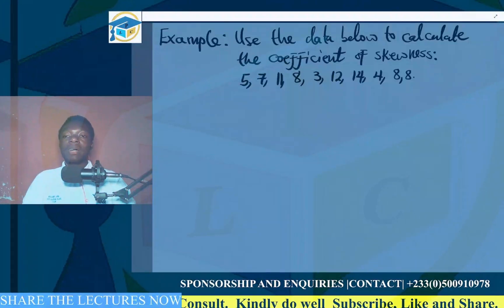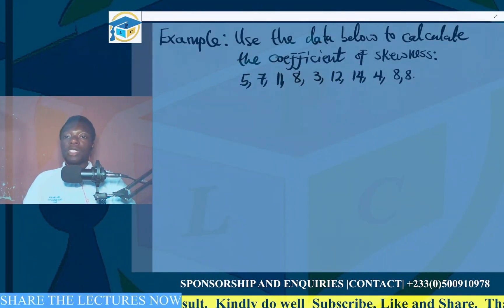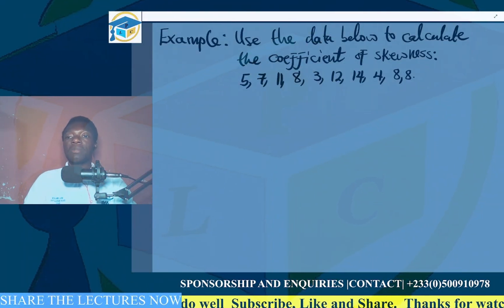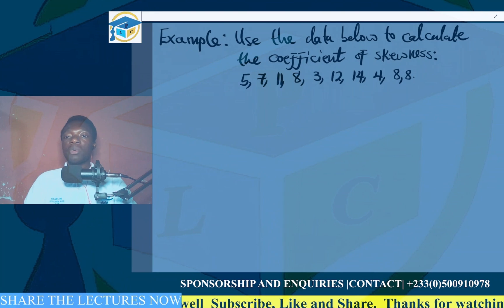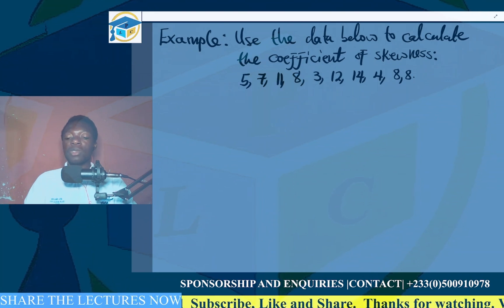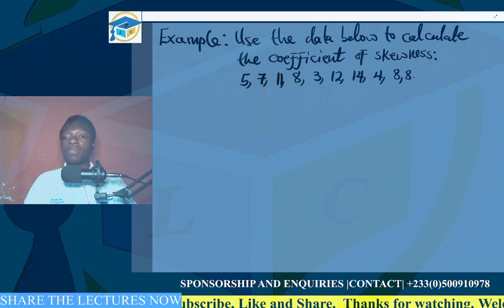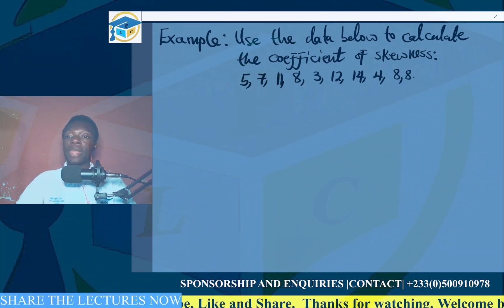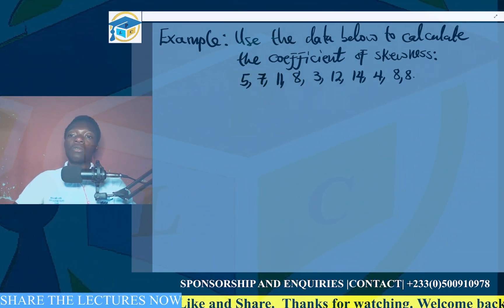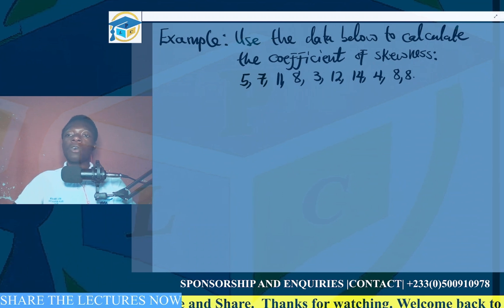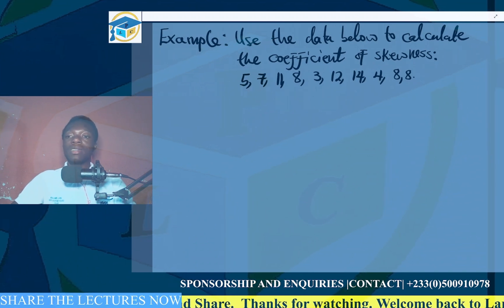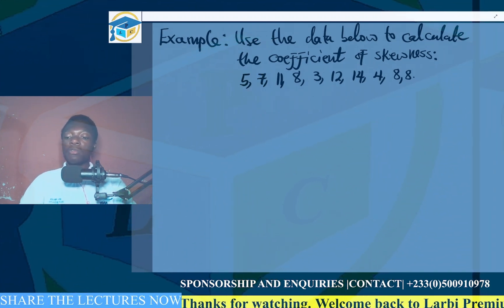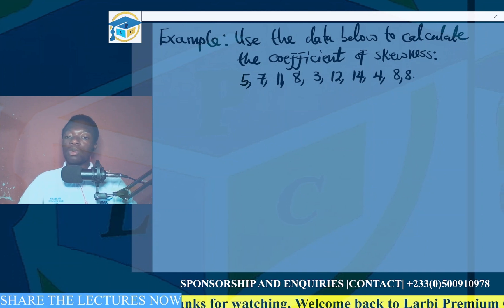Let's look at an example of a coefficient of skewness. We are asked to use the data below to calculate the coefficient of skewness. The dataset is: 5, 7, 11, 8, 3, 12, 14, 4, 8, and 8.